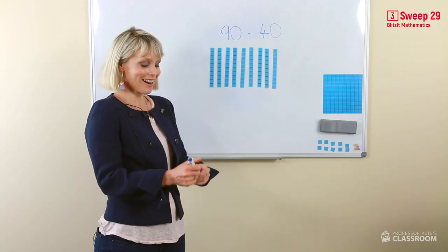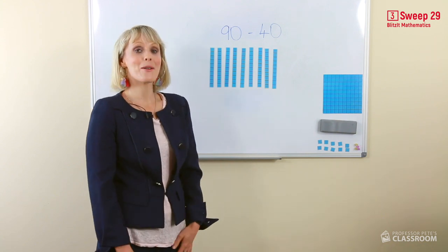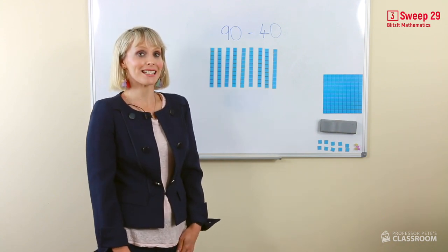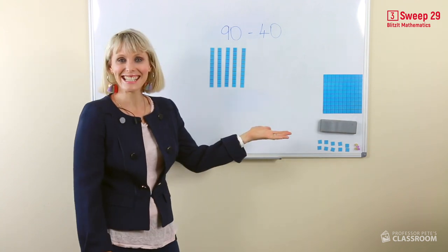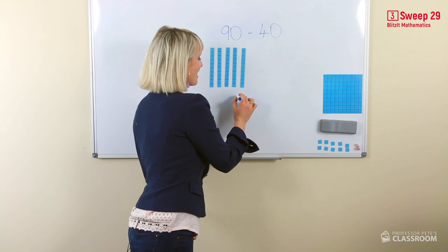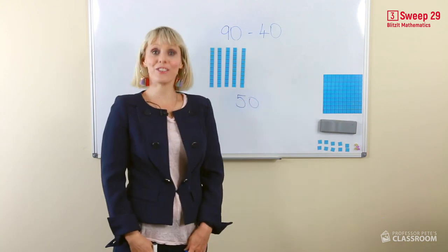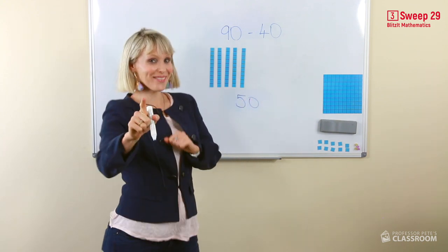Therefore, the answer for nine tens take away four tens is... That's right, five tens. And we write and say that as 50. Let's do another one.